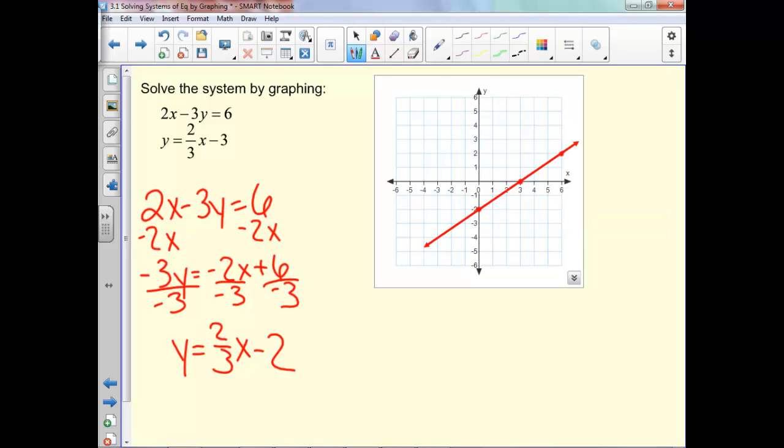Notice the second line is already in our slope-intercept form. So our y-intercept here is negative 3, and our slope is up 2 over 3 again.